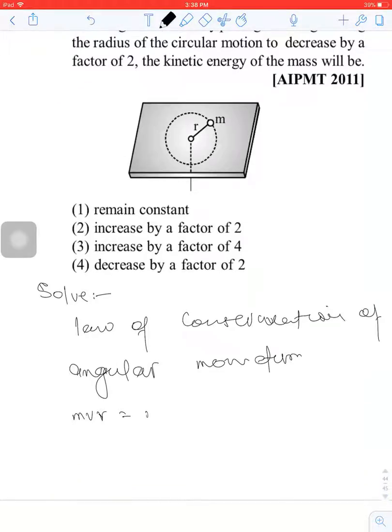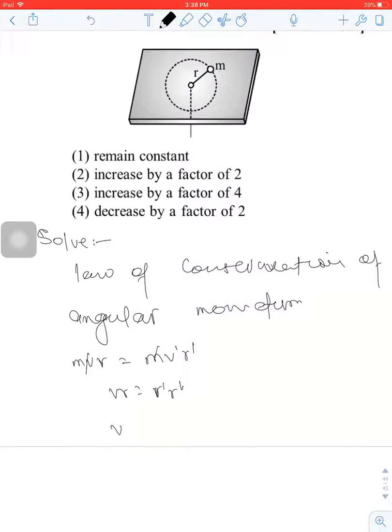Angular momentum is m v r. So m v r equals m v' r', where r' equals r/2. Canceling out and solving, we get v' equals 2v.